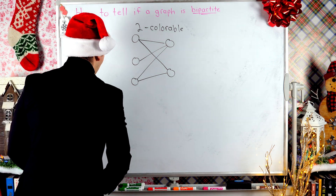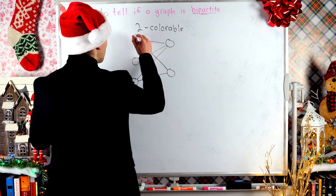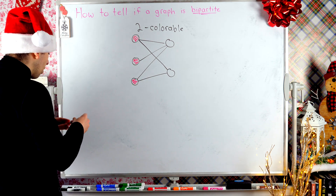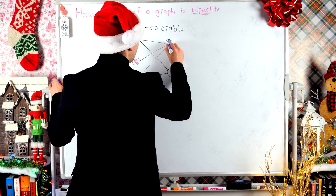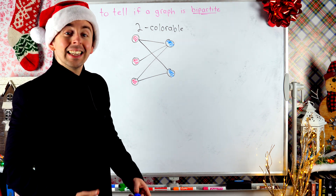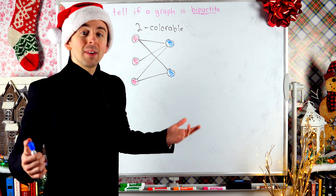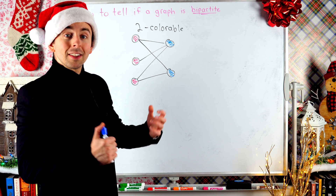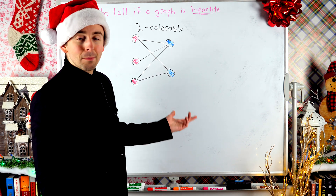For example, with this graph we could color vertices on the left red — every vertex on the left gets one color — and then every vertex on the right gets some other color, say blue. You'll notice that vertices with the same color are not adjacent. Clearly, being two-colorable and bipartite are the same thing, but talking about it in terms of coloring will help us figure out how to determine this by hand.